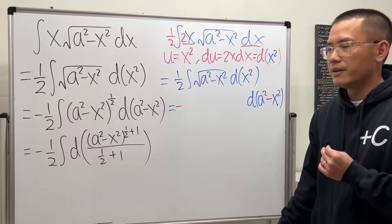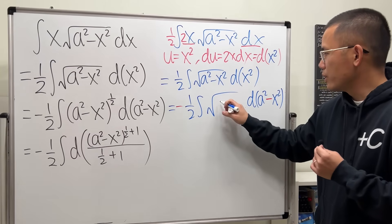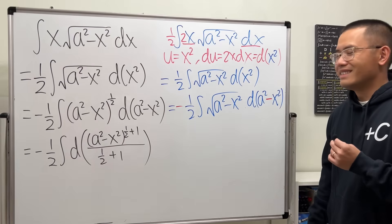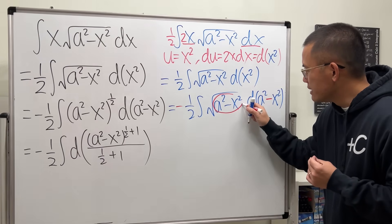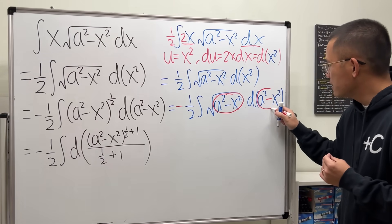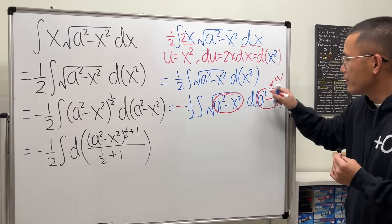We need a negative here. And then we have the 1 half integral, still the square root, a squared minus x squared. Now, we are in business. You can treat this as a variable. You can look at this as like a w or something, right? Just seriously, look at this as the w.